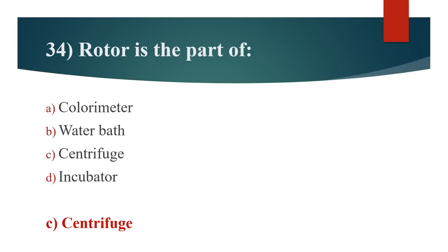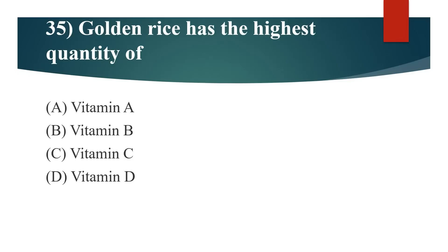35th question: Golden rice has the highest quantity of? Option A: Vitamin A. Option B: Vitamin B. Option C: Vitamin C. Option D: Vitamin D. Answer is Option A: Vitamin A.